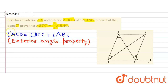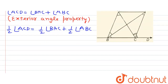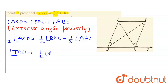Now dividing by half on both sides of this equation, we get: half of angle ACD is equal to half of angle BAC plus half of angle ABC. Since TC is the bisector, half of angle ACD equals angle TCD. So angle TCD is equal to half of angle BAC plus half of angle ABC. Let's name this as Equation 1.